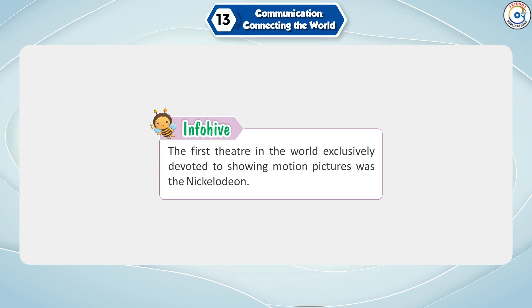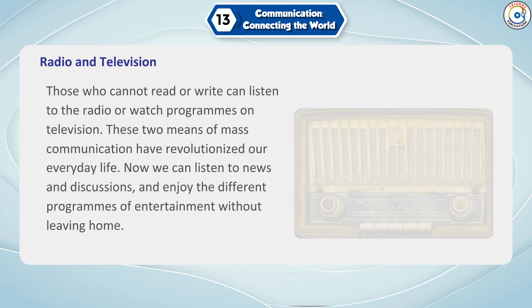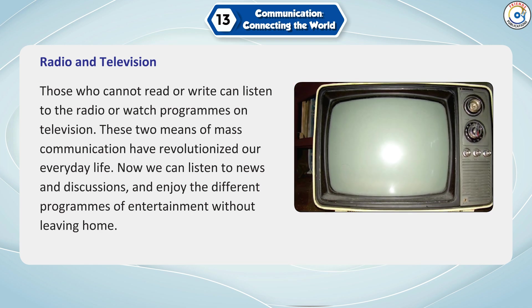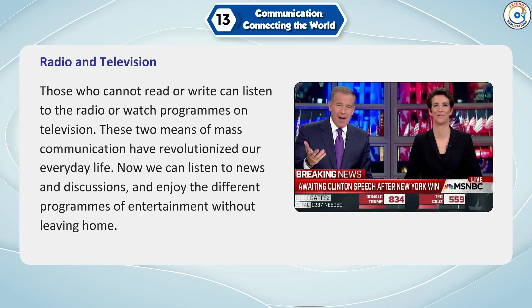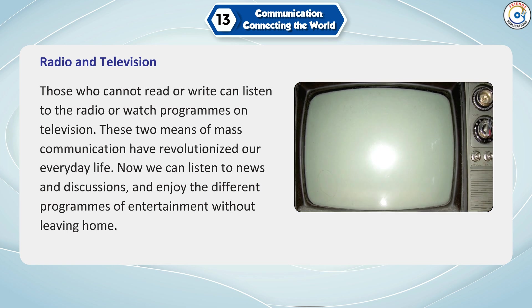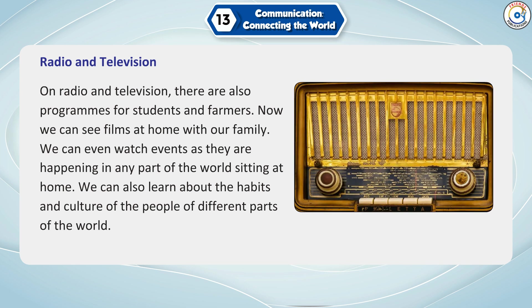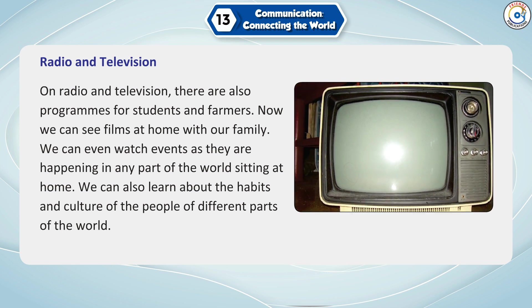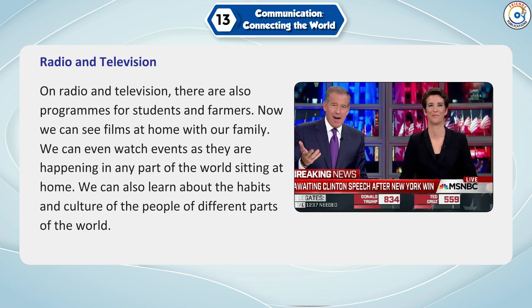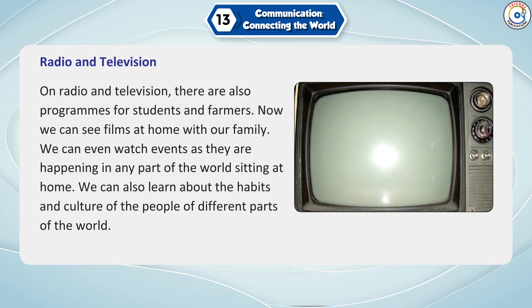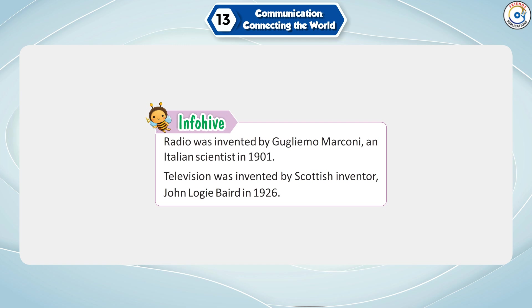The first theatre in the world exclusively devoted to showing motion pictures was the Nickelodeon. Those who cannot read or write can listen to the radio or watch programs on television. These two means of mass communication have revolutionized our everyday life. We can listen to news and discussions and enjoy different programs of entertainment without leaving home. There are also programs for students and farmers on radio and television. We can see films at home, watch events as they happen anywhere in the world, and learn about the habits and culture of people from different parts of the world. Radio was invented by Guglielmo Marconi, an Italian scientist, in 1901. Television was invented by Scottish inventor John Logie Baird in 1926.